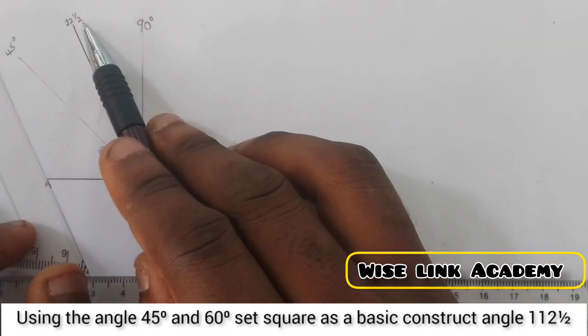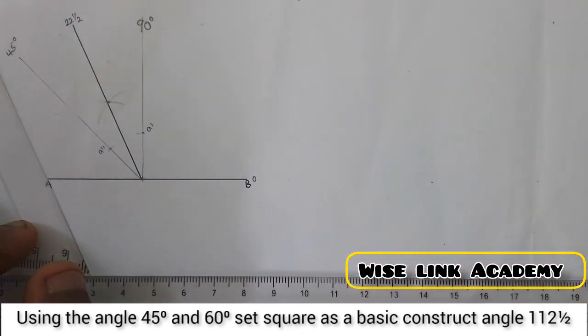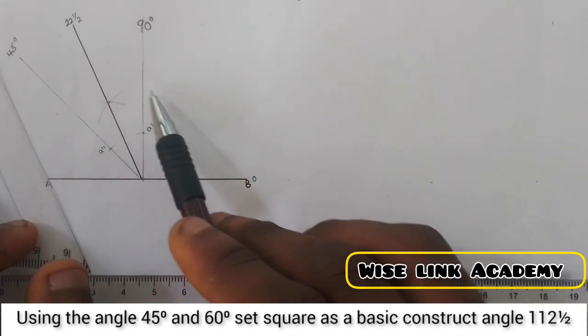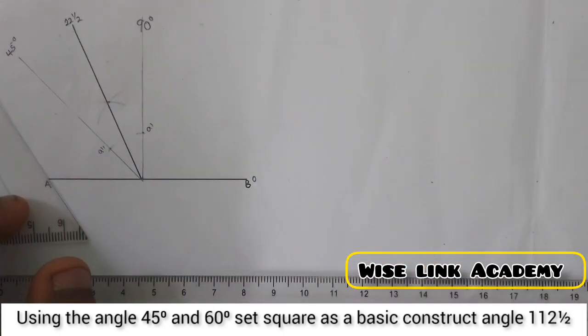So 22.5 is the same thing as 22.5. If I add it to 90, I get the angle we're looking for, which is 112.5.